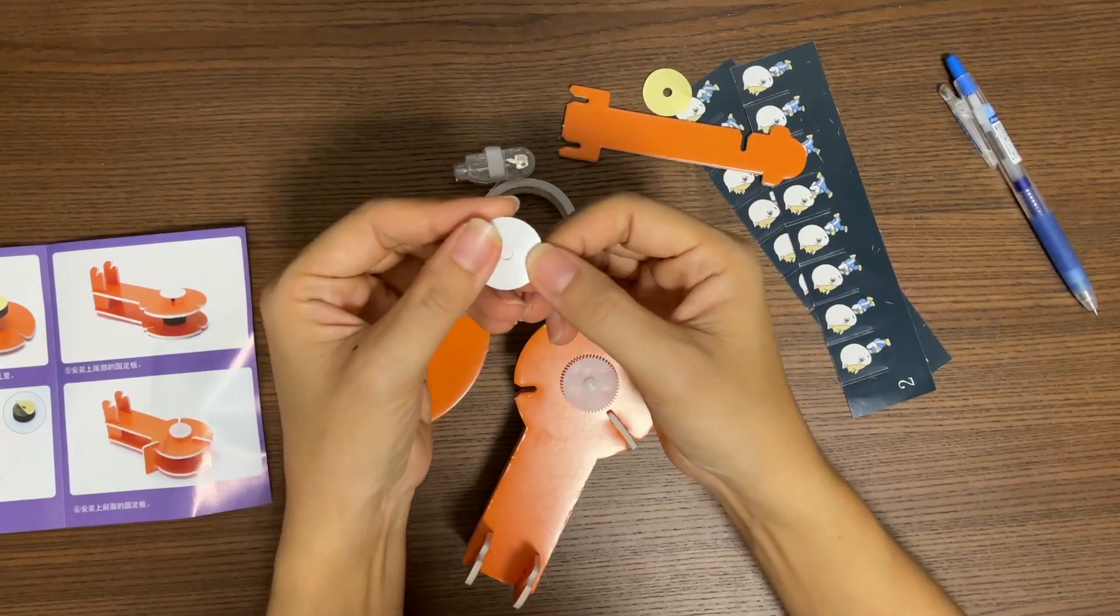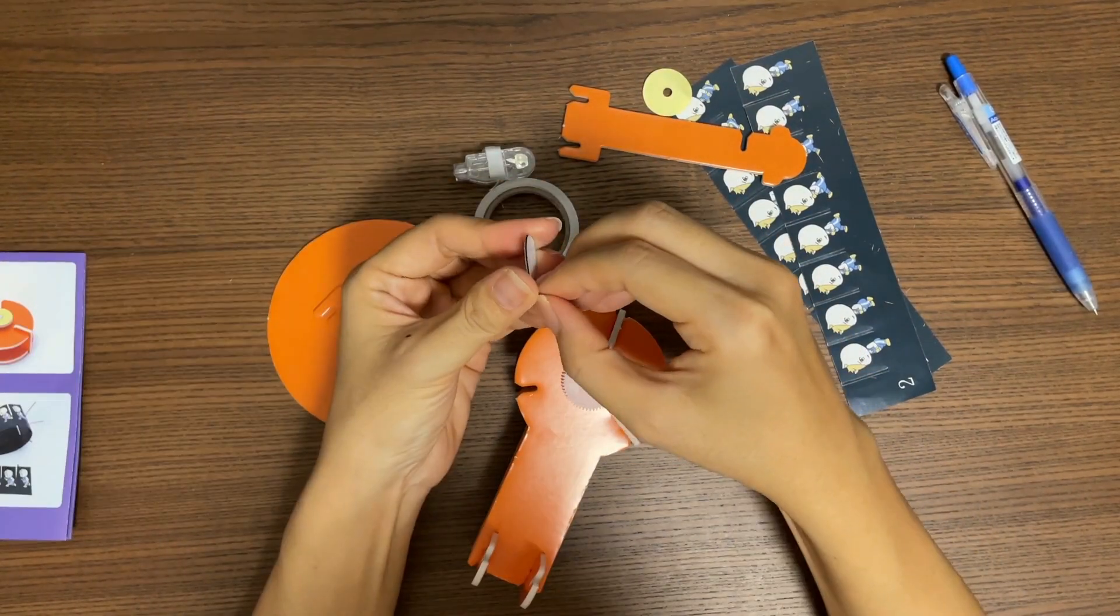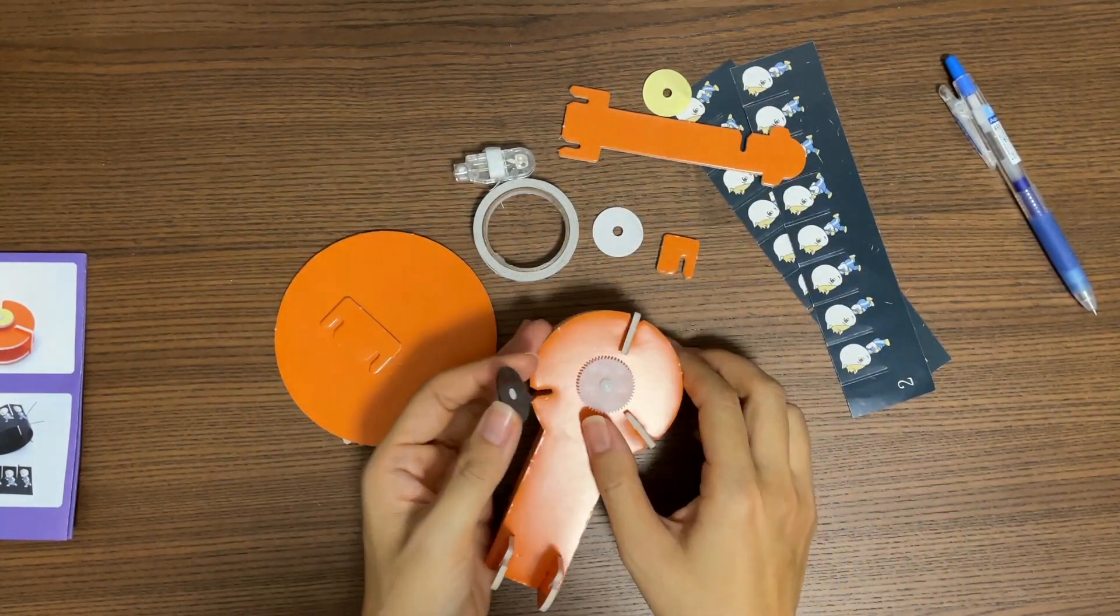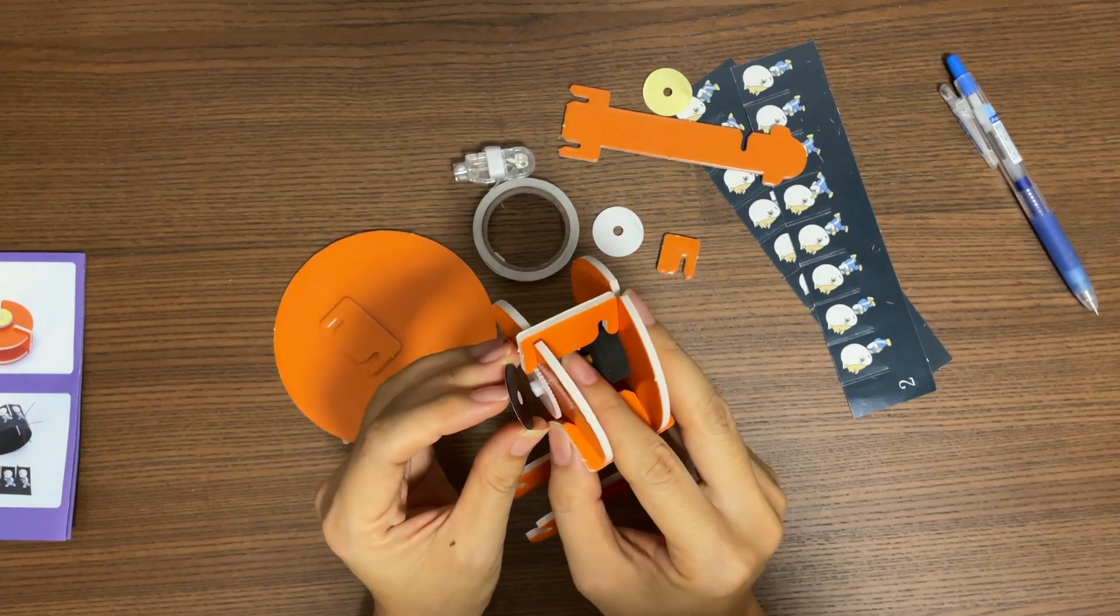Now take this double-sided tape. Peel off from one side and paste it onto the white plastic circle.